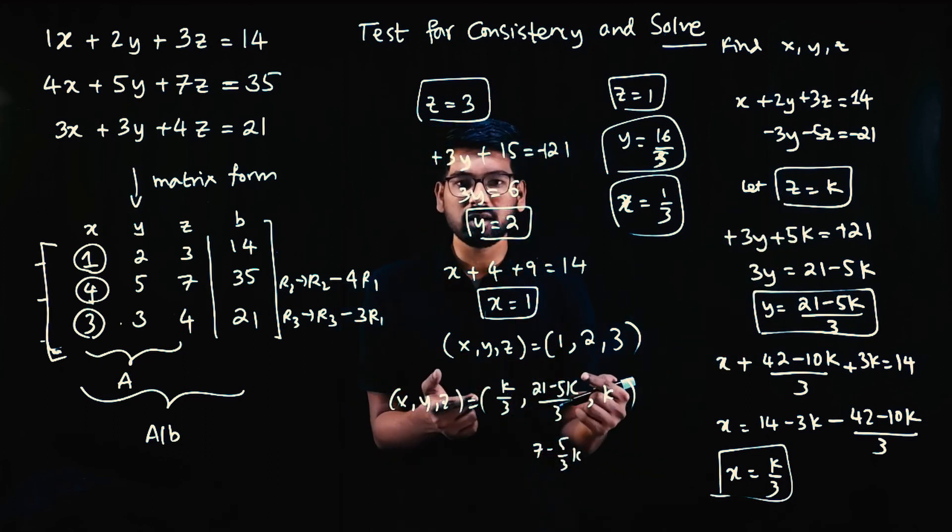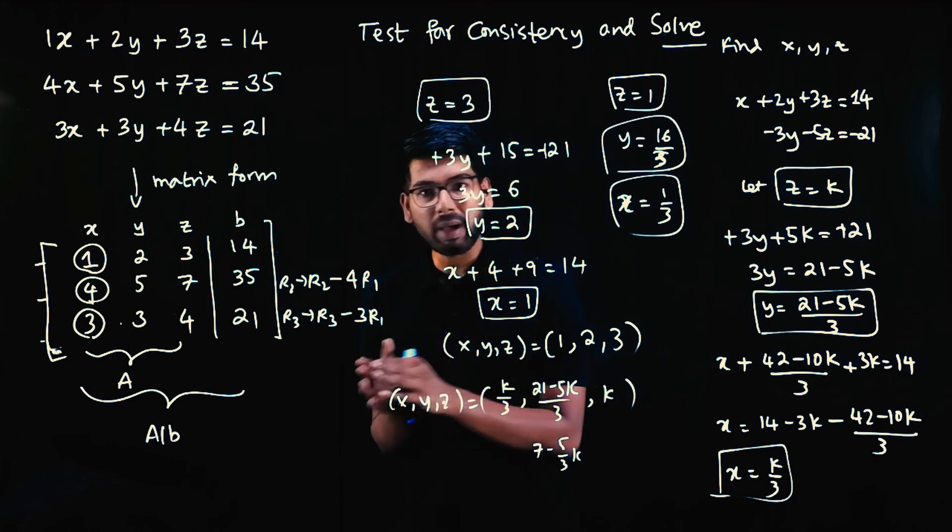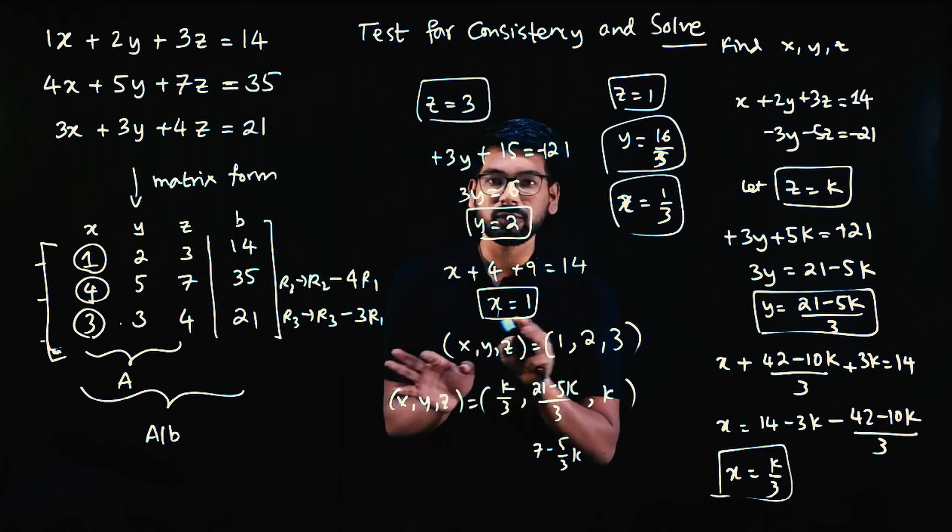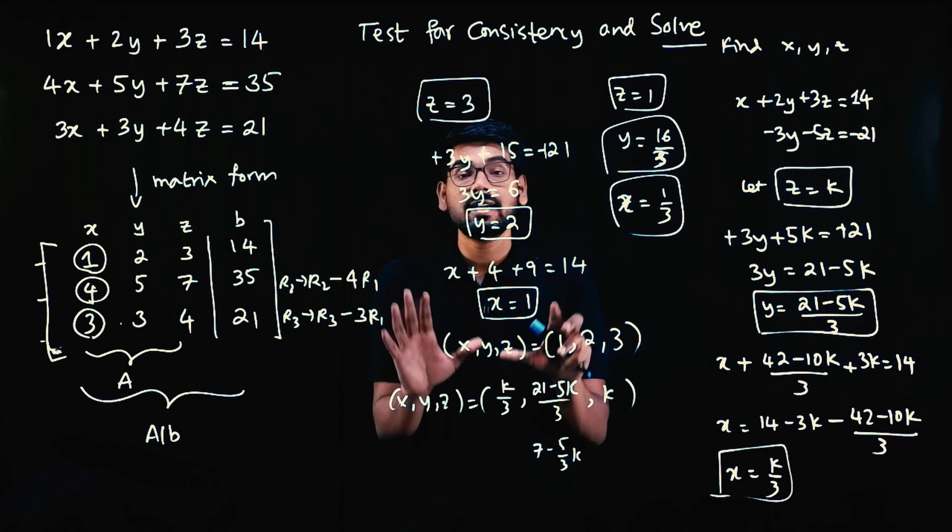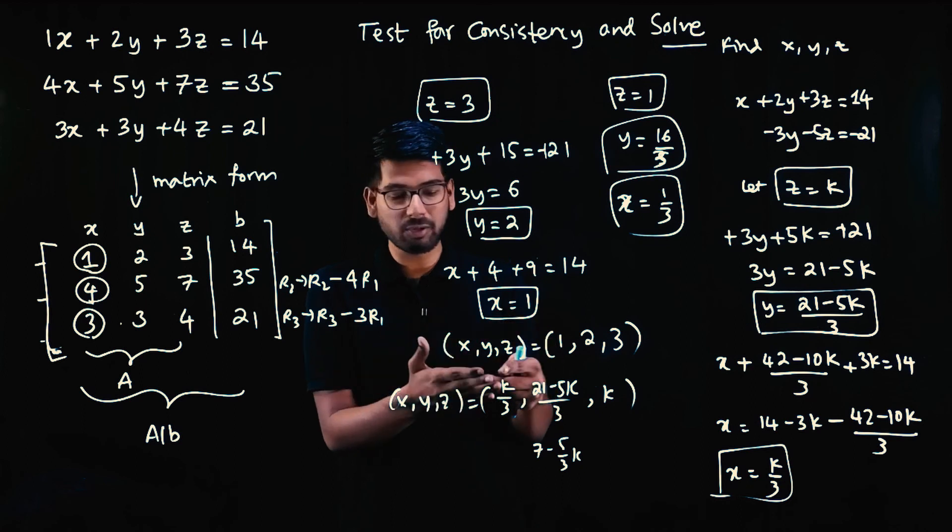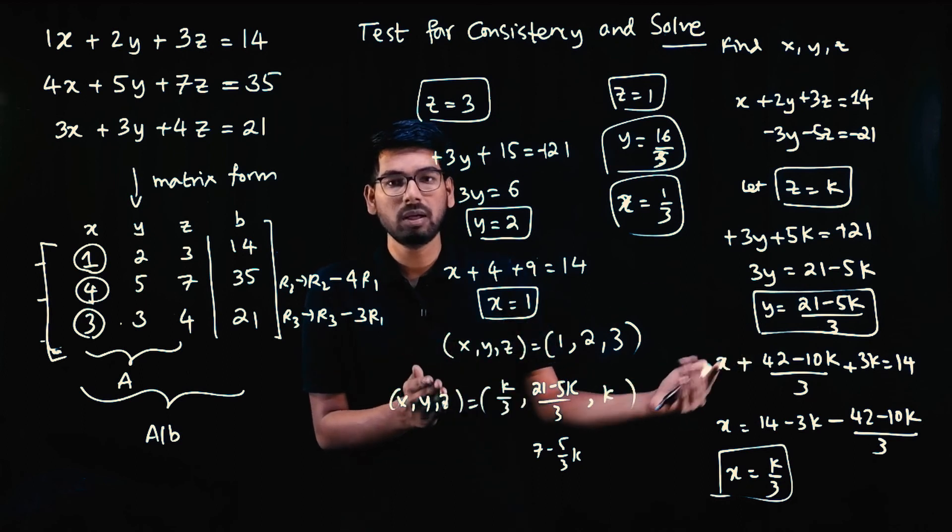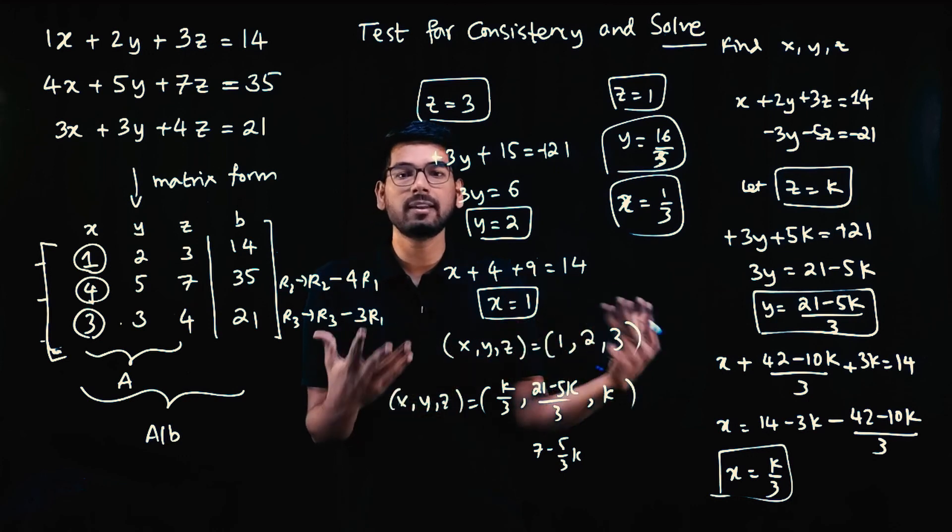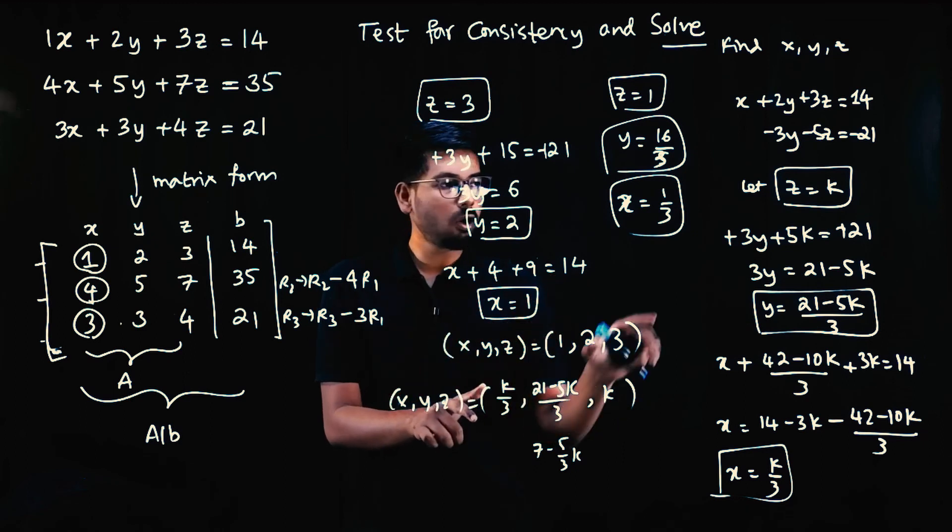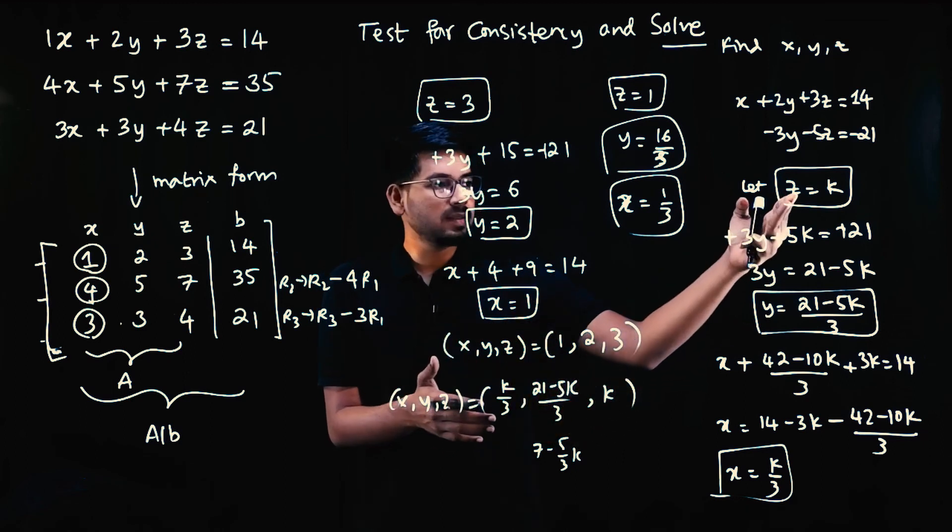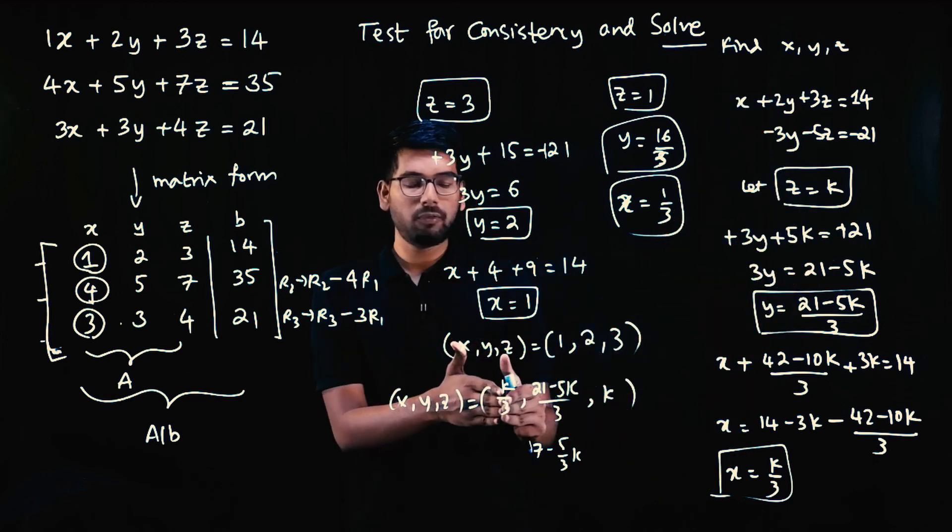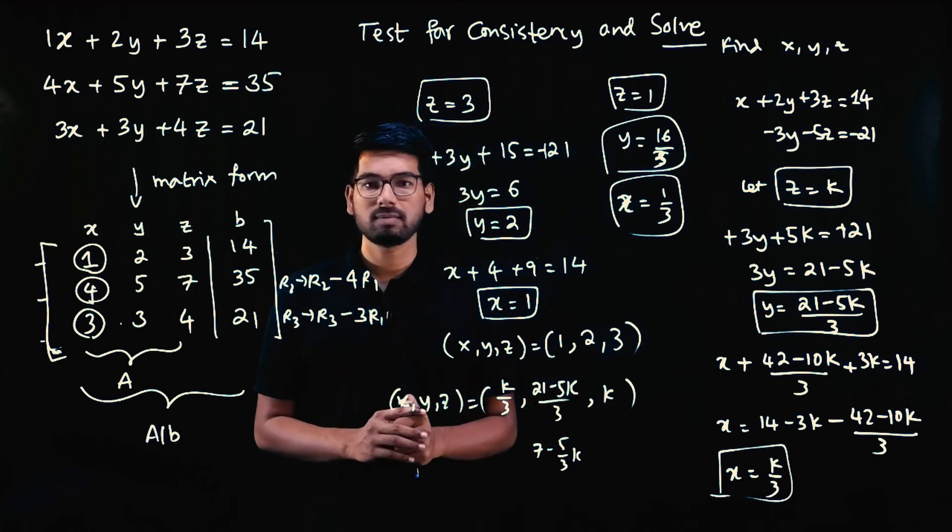k can be any real number from minus infinity to plus infinity. You can substitute any value. For each value of k, there's a different x, y, z solution. That means infinite solutions. For infinitely different numbers we can substitute in k, each k value gives one solution. This is how you find and write infinitely many solutions. Most of the time, let z equal k, then x and y will contain k terms. This represents the infinitely many solutions.